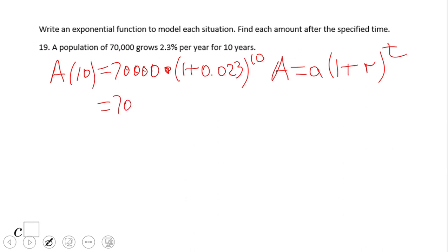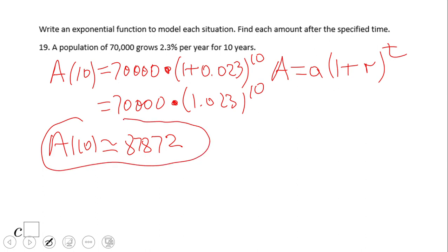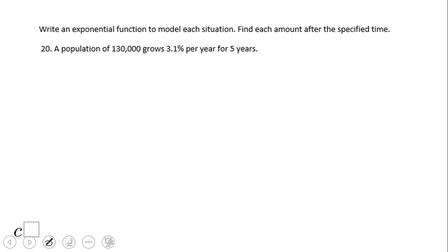So let's do one simplification here, which is the parentheses, and then like usual we're going to need a calculator. The population after 10 years is approximately 87,872. I rounded it down here because we're talking about population. Pause this video clip and try number twenty.